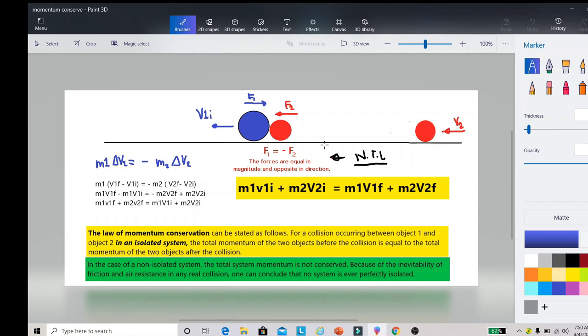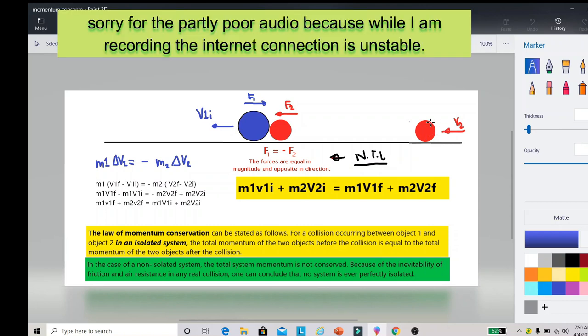Ngayon, dito sa illustration na to, mas mataas yung velocity 2 or mas mabilis si ball 2 kesa kay ball 1. Somewhere, somehow mag-aabot sila as illustrated in this pikagitna. Aabutan ni red ball si blue ball somewhere, somehow and eventually magkakaroon sila ng tinatawag natin na collision. Ngayon, yung collision na yun magkakaroon tayo ng tinatawag na impulsive force na i-exert nitong seria ball 2 kay ball 1.